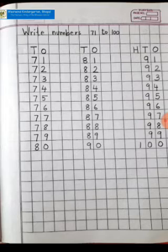After 90 you are going to write 91, 92, 93, 94, 95, 96, 97, 98, 99. Because we were having 9 bundles of 10 sticks.